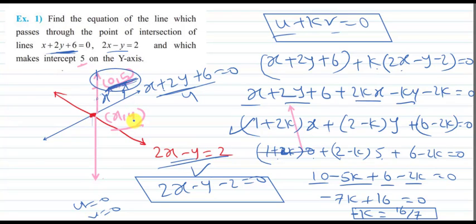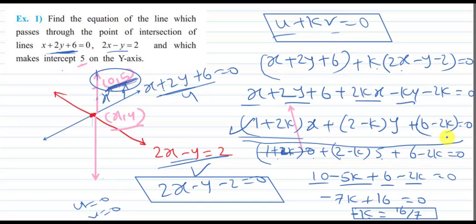So k equals 16 upon 7 is the value of k. Just put this value of k into the general equation and you will get the equation of the line passing through the intersection of these two lines and also passing through 0 comma 5 — that is, y-intercept 5. It was that simple. As homework, all students should put the value of k into the equation and comment the answer.